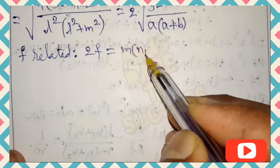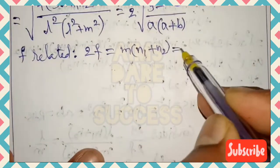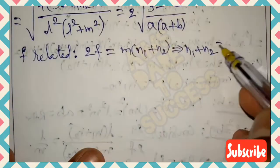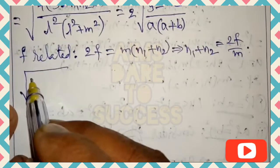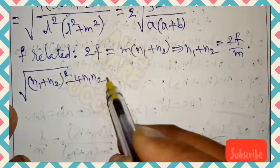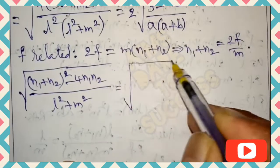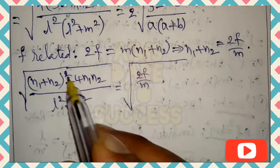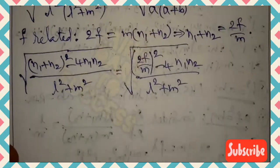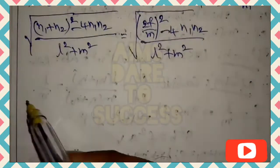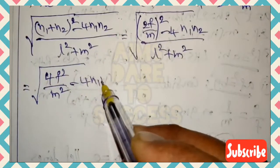Now going with the f-related value: from 2f = m(n₁+n₂), we get n₁+n₂ = 2f/m. Substituting into the distance formula: √[(2f/m)² − 4n₁n₂] / √(l²+m²) = √[4f²/m² − 4n₁n₂] / √(l²+m²). Applying the numerator and denominator approach, taking whole square gives √[4f² − 4n₁n₂·m²] all over m·√(l²+m²).